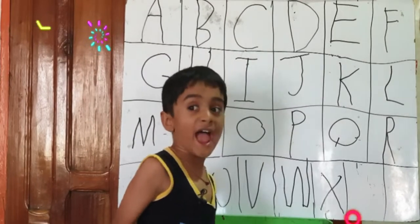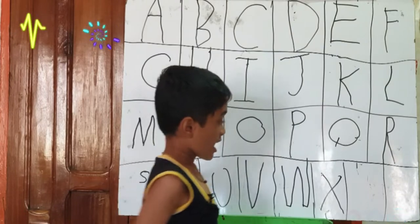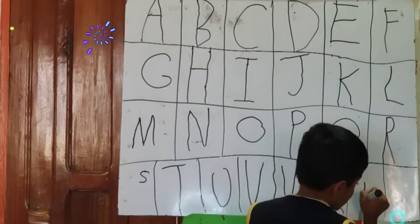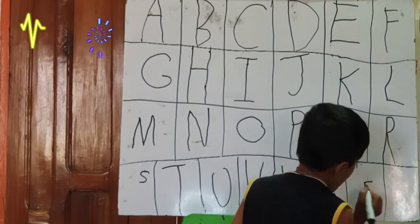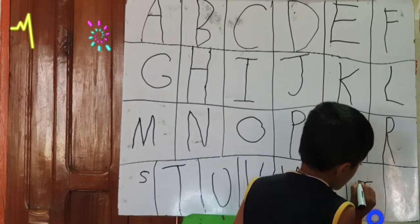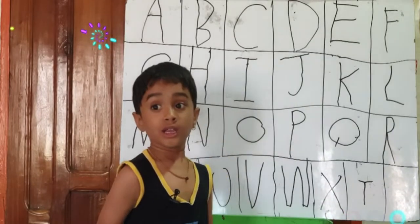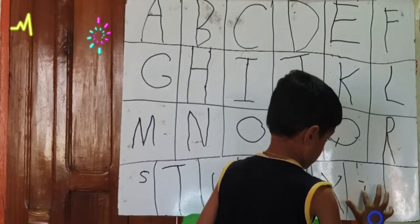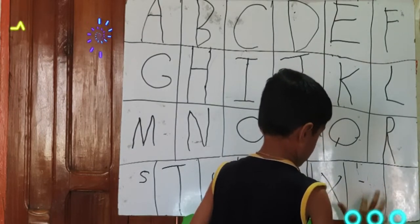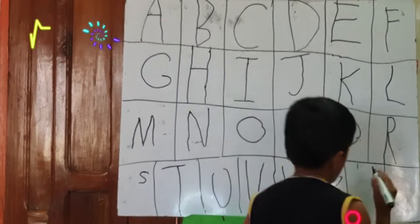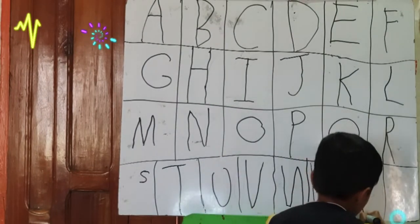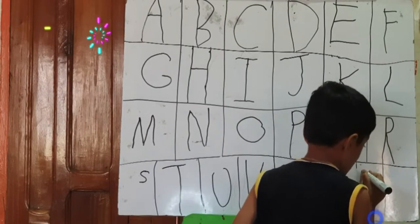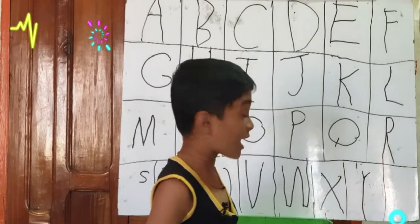Now Y. One standing line, one cross up, one cross up. Y.